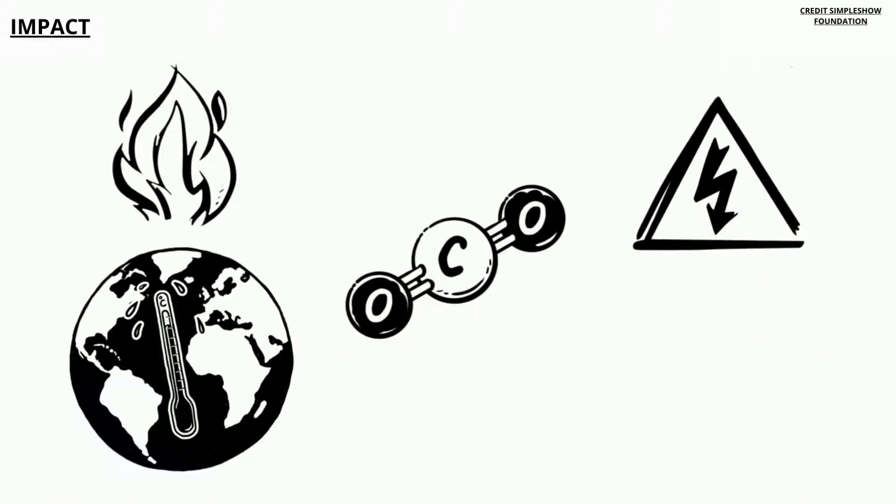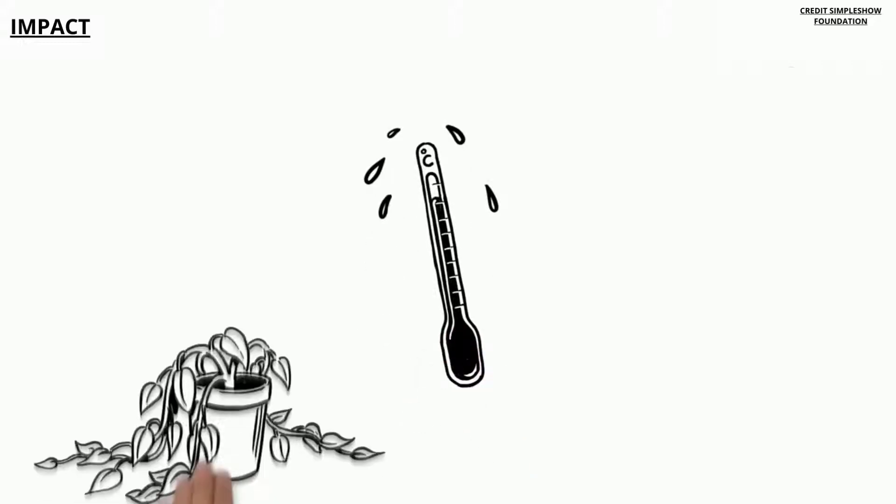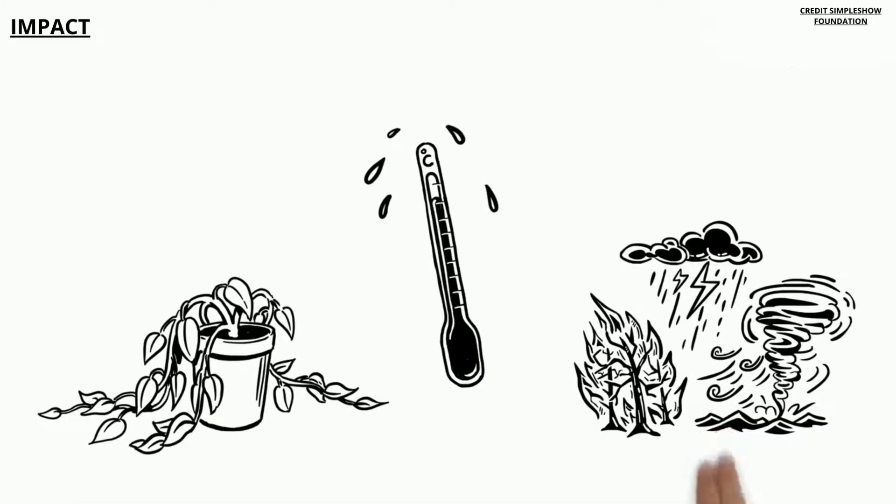Producing electricity and raising cattle also adds to the high levels of greenhouse gases in the atmosphere. This increased heat can have negative effects on vegetation and natural disasters.